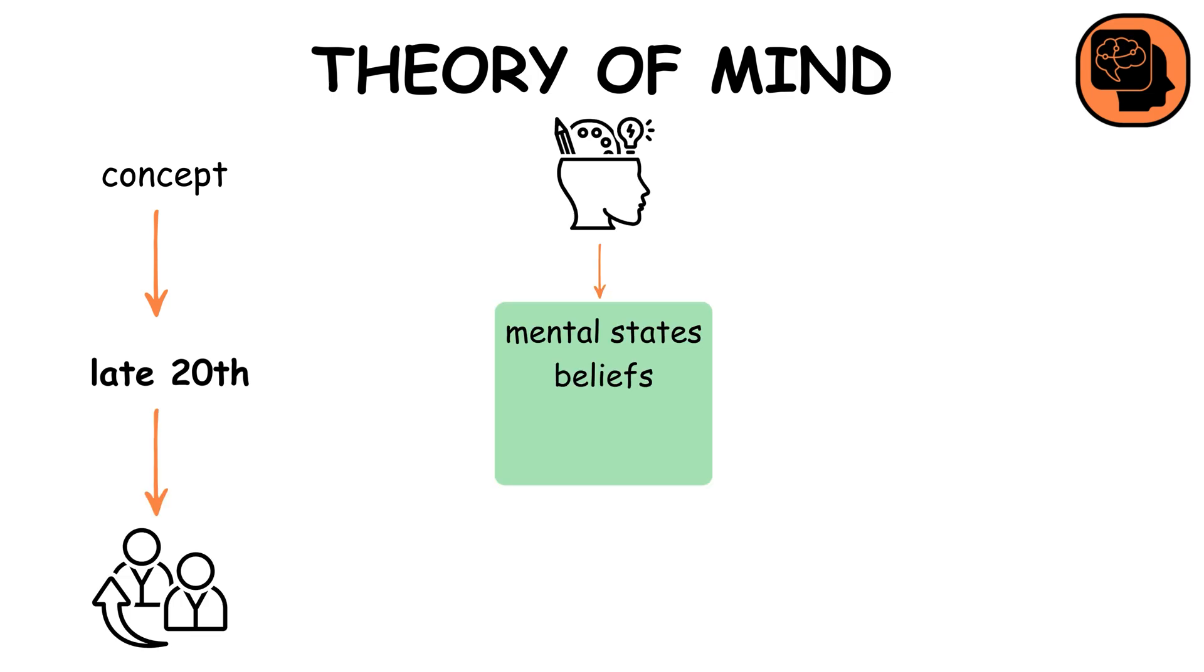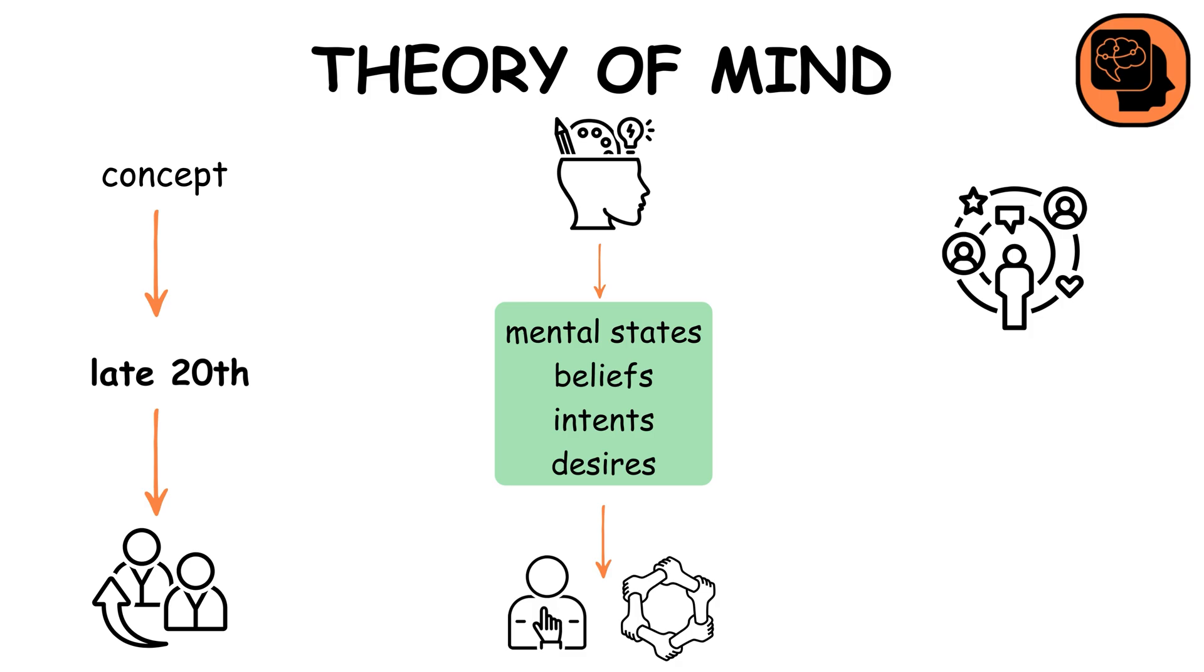Theory of Mind, a concept gaining prominence in the late 20th century, refers to the ability to attribute mental states, beliefs, intents, and desires to oneself and others. It's crucial for understanding social interactions and is a key area in autism research.